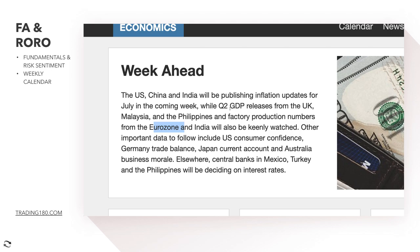UK Q2 GDP should be positive, and the Bank of England has signaled they're looking to hike interest rates, which is positive. However, the data has to support the narrative before a rate hike can happen — the data has to support that decision.